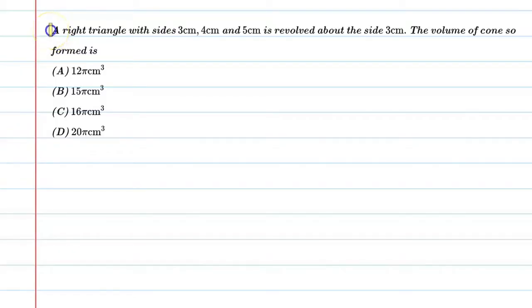Hello students, let's solve this question. A right triangle with sides 3 cm, 4 cm and 5 cm is revolved about the side 3 cm. The volume of the cone so formed is - so basically what is said in this question is that a right triangle is 3, 4, 5 cm.